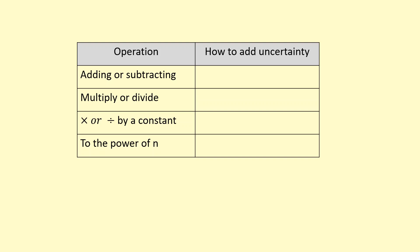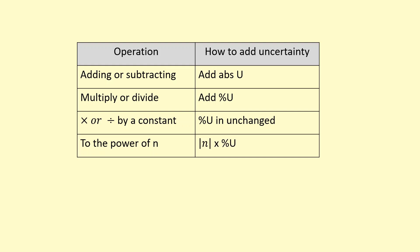To summarize: when adding or subtracting quantities with uncertainty, just add the absolute uncertainties. When multiplying or dividing quantities with uncertainty, add the percentage uncertainties. When multiplying or dividing by a constant with no uncertainty, the percentage uncertainty remains unchanged, though the absolute uncertainty can change. When raising something with uncertainty to the power of n, multiply the percentage uncertainty by the modulus of n — meaning the positive version of that number.